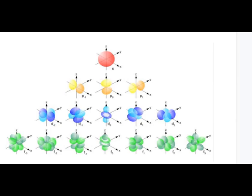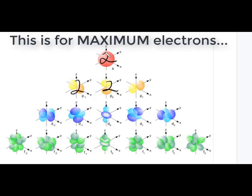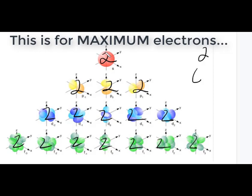Let's take a look at the electron accounting with the orbitals in a visual manner. In the S, we have one orientation, so there's a total of two electrons. In each P, there are two electrons per orientation, giving a total of 6. For D, two electrons per orientation gives 10 total. And each F orbital gets two electrons max, giving us totals of 2, 6, 10, and 14.